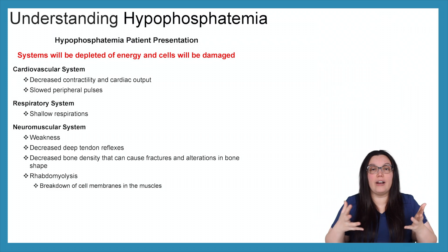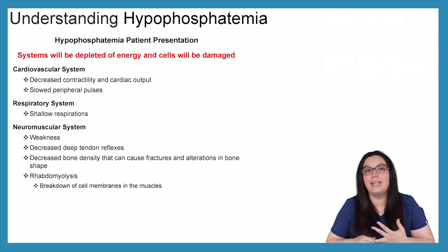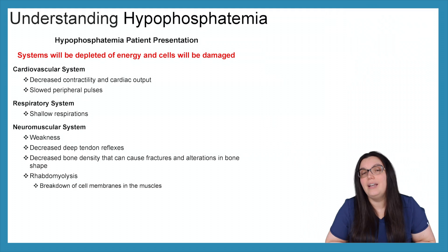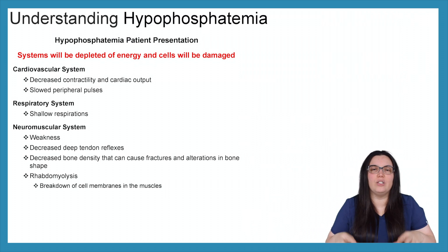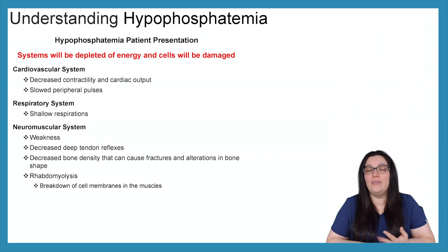What is our patient population experiencing hypophosphatemia really going to look like? Phosphorus helps with cellular metabolism, so it helps with energy as well as the integrity of our phospholipid bilayers. If we don't have enough, systems start to become depleted of energy and cells start to become damaged. With our cardiovascular system, we're going to have a decrease in contractility, cardiac output, and slowed peripheral pulses. With our respiratory system, we're going to have very shallow respirations — we don't have enough energy to maintain those respirations. With our neuromuscular system, we're going to have weakness, decreased deep tendon reflexes, decreased bone density that can cause fractures, as well as alterations in bone shape.